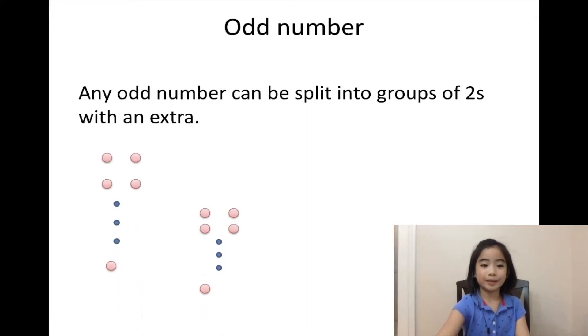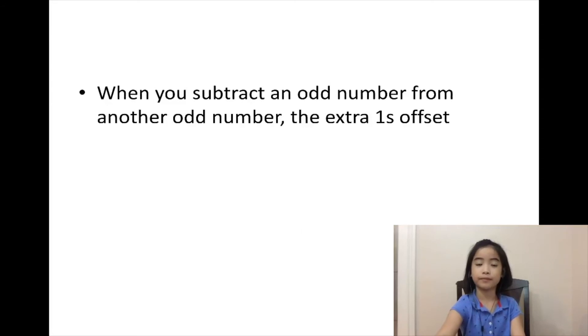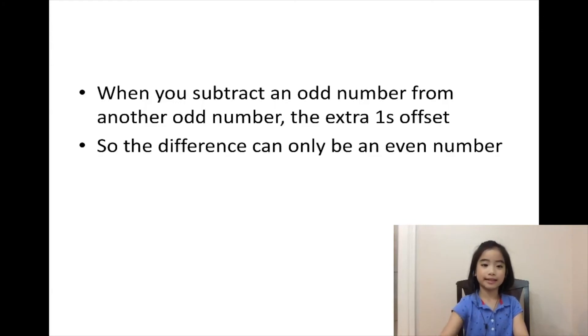When you subtract an odd number from another odd number, the extra one is offset. So now let's make it clear: when you subtract an odd number from another odd number, the extra one is offset, so the difference can only be an even number.